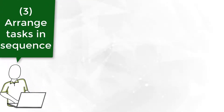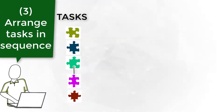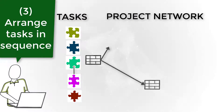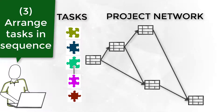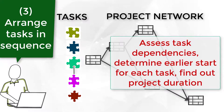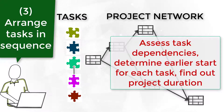Step 3: arrange tasks in a sequence. Putting tasks in a logical work sequence is the next challenge to develop the project schedule. First, you have to find out the relationships between tasks and identify which task must be done before the other. If a task has to be done before another, it is called a predecessor.